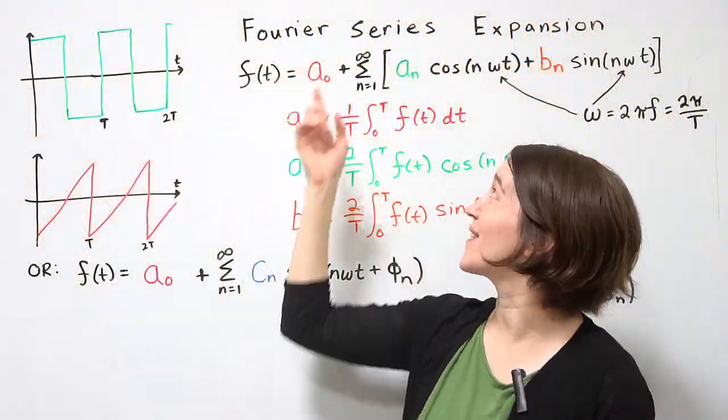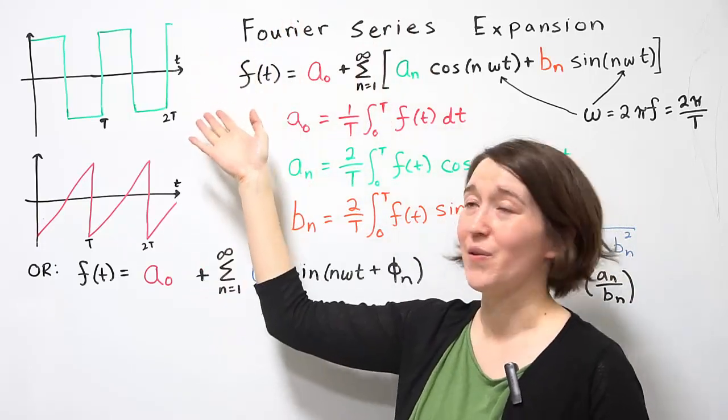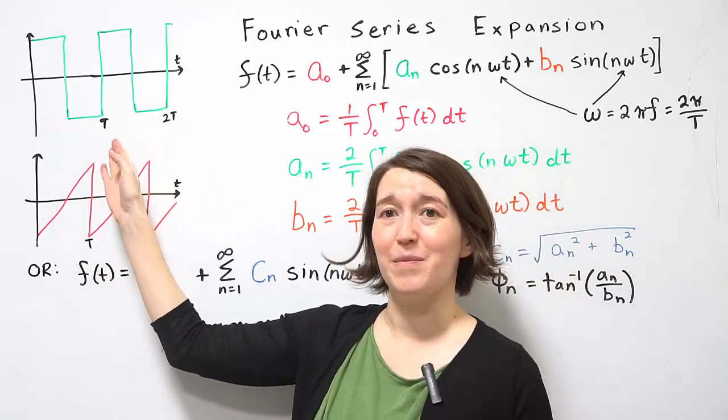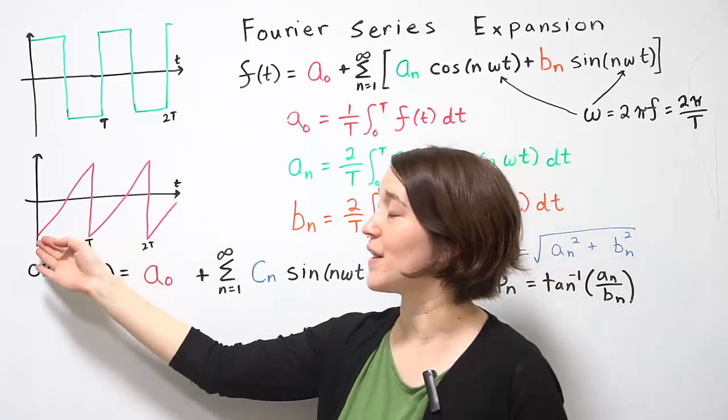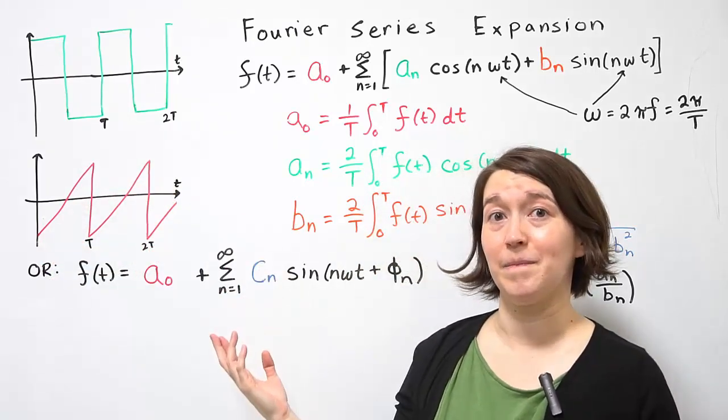Here we'll talk about the Fourier series expansion for periodic waveforms. I've shown one example here, a square wave which is repeating over period T as shown here.